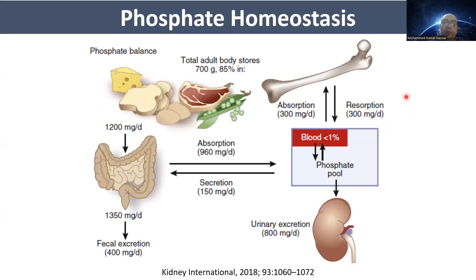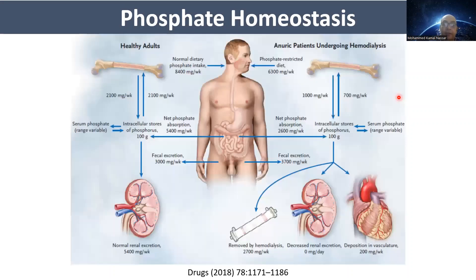Normally, phosphate homeostasis occurs between three main organs: bone, intestine, and kidney. In healthy adults, there is normal renal phosphate excretion and a net phosphate balance.